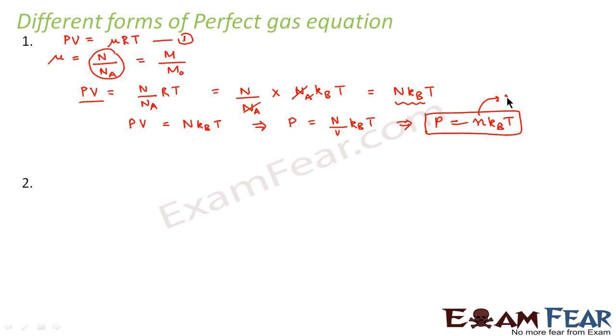So this n is nothing but number density. So the perfect gas equation can also be written like this, where N is nothing but number density, that is number of molecules per unit volume. So this was my first alternate form of perfect gas equation.